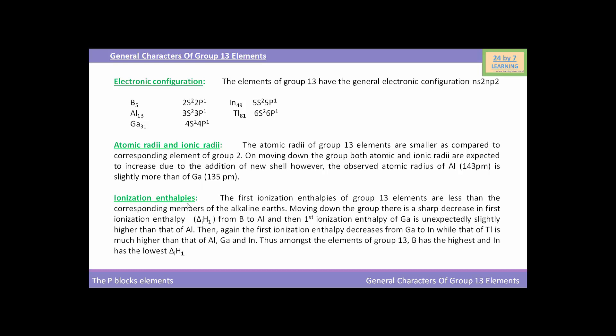Now, come to the ionization enthalpies. The first ionization enthalpies of group 13 elements are less than corresponding members of the alkaline earth metals. On moving down the group, there is a sharp decrease in first ionization enthalpy from boron to aluminum, and then the first ionization enthalpy of gallium is unexpectedly slightly higher than that of aluminum. Then again the first ionization enthalpy decreases from gallium to indium, while that of thallium is much higher than that of aluminum, gallium, and indium. Thus, among the elements of group 13, boron has the highest and indium has the lowest first ionization enthalpy.